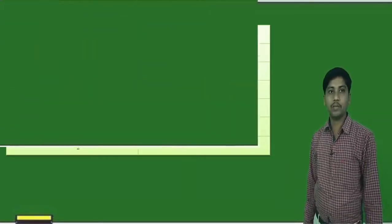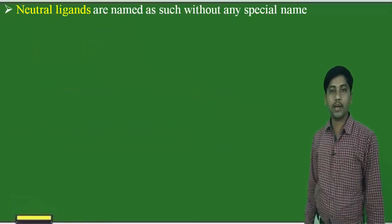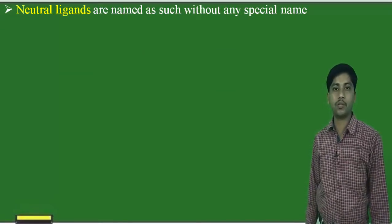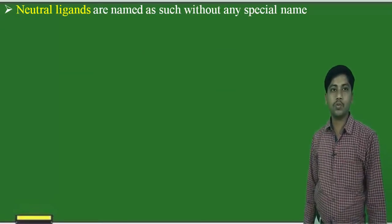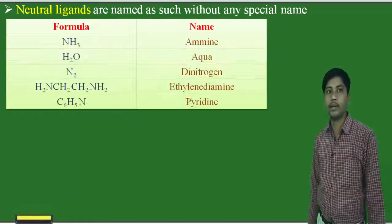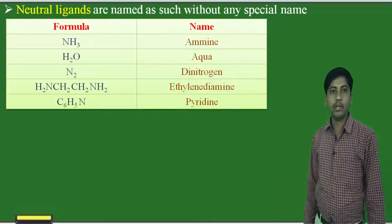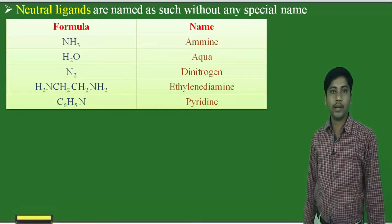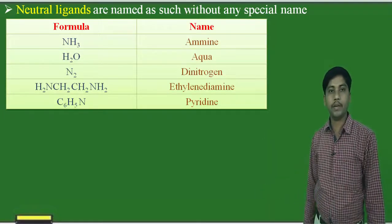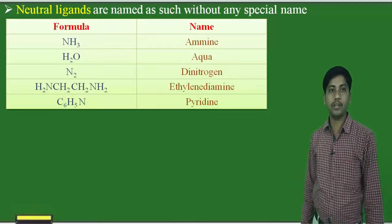Now we will see the neutral ligands. Neutral ligands are named as such, without giving any prefix or suffix to them. Examples of neutral ligands: NH3 (amine), H2O (aqua), N2 (dinitrogen), ethylenediamine, and pyridine. These are the neutral ligands and they are named as they are.